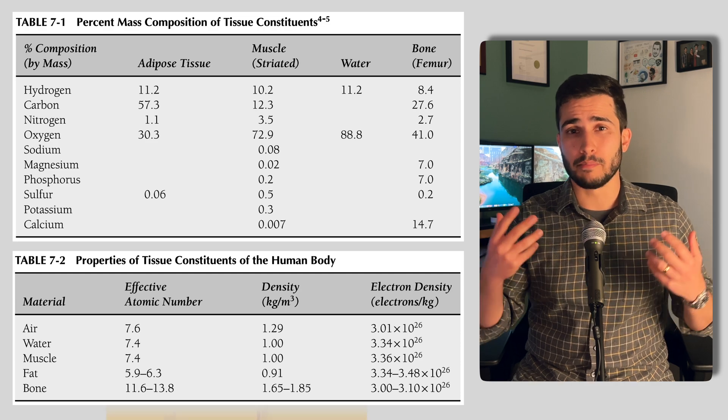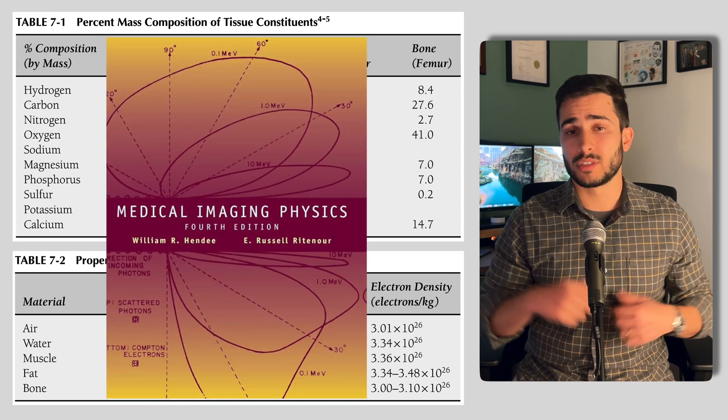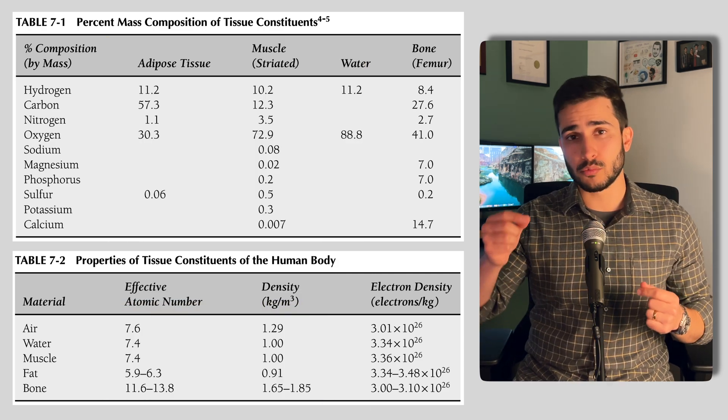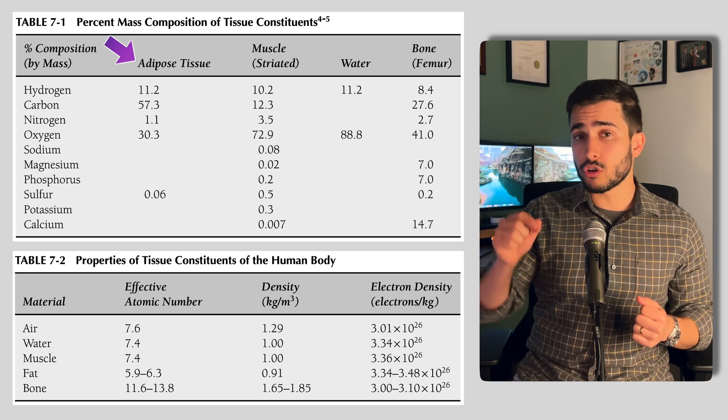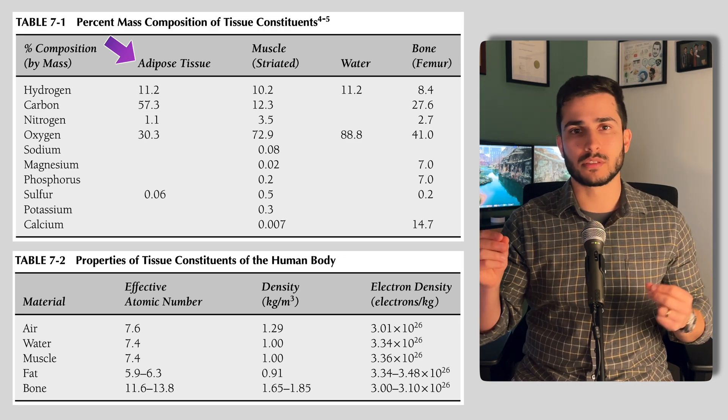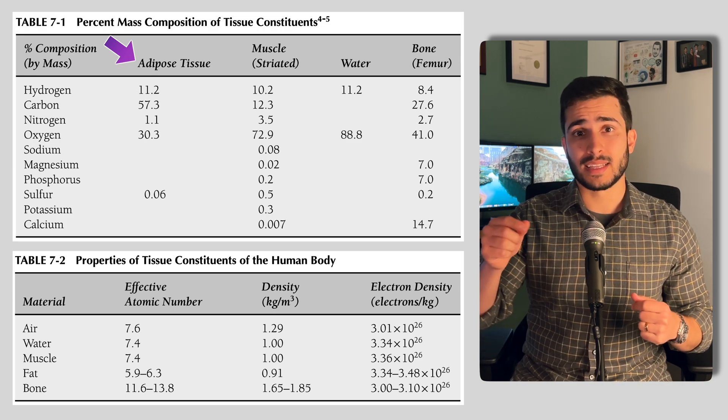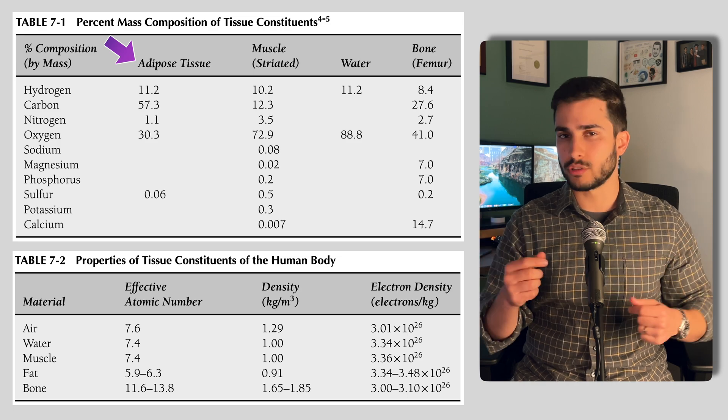And by the way, these are coming from the Medical Imaging Physics textbook by William R. Hendy, which is a fantastic resource, and I'll link that down below for you. So as you can see in this table 7.1, fat, or rather adipose tissue, has a greater concentration of low Z elements, in particular hydrogen. Where Z is referring to the atomic number, that is the number of protons in the atom.